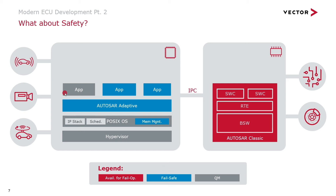Don't misunderstand — the microprocessor side is also intended for safety applications. In fact, we are currently finalizing certification of our Adaptive MicroSAR stack for ASIL-D. There are two different types of safety requirements. Consider an automated highway pilot: parts of its software need to work no matter what, bridging the time until the driver can take over. These parts have so-called availability requirements and are referred to as fail-operational parts of the system, indicated here in red.